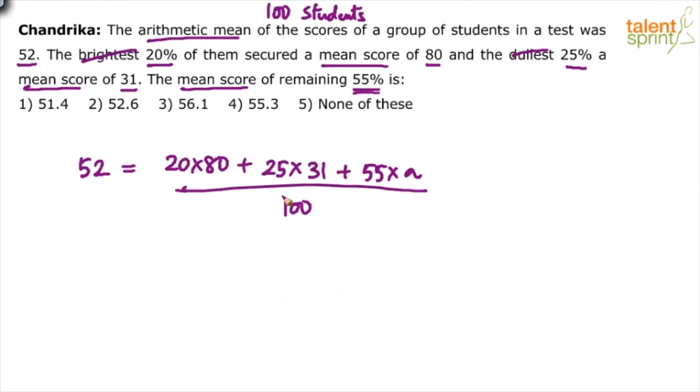The only step that I would do for you all is take 5 as a common multiple. So 5×4, 5×5, 5×11 and this is 5×20. Now do this. 52×20 is 1040 so we can say 1040 is equal to 320 plus 5×31 is 155 plus 11a.